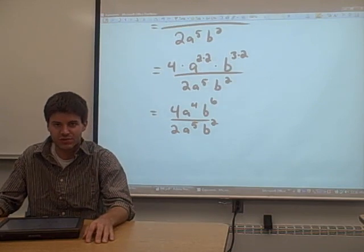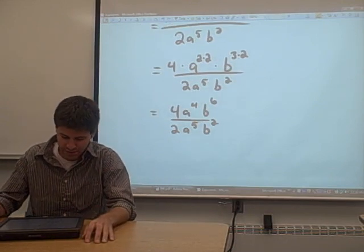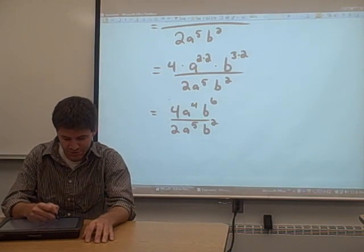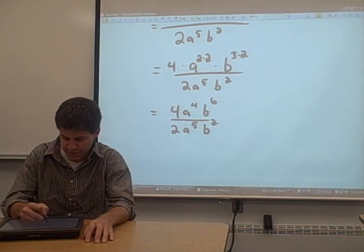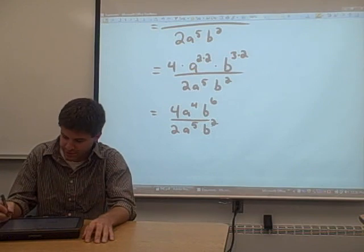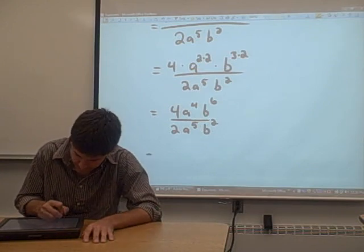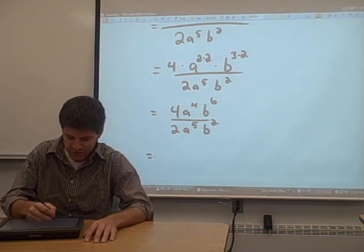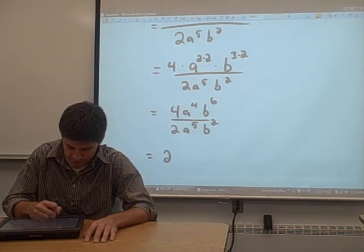Now we're down to the same situation that we had last time. We have some constants that can be simplified, some a terms that can be simplified, and some b terms that can be simplified. We take the two constants, 4 divided by 2, and we're just going to end up with a 2.